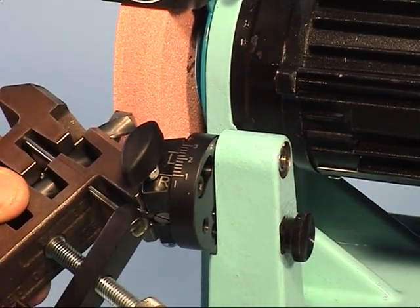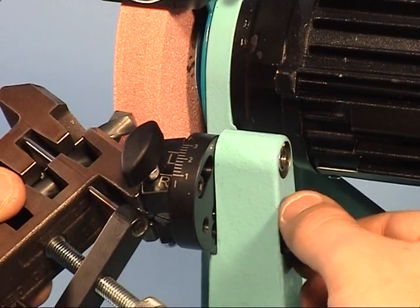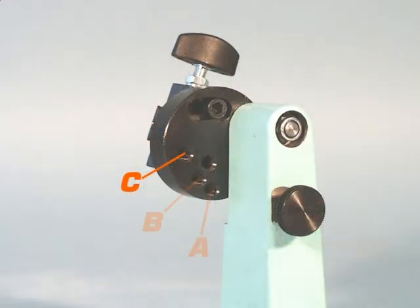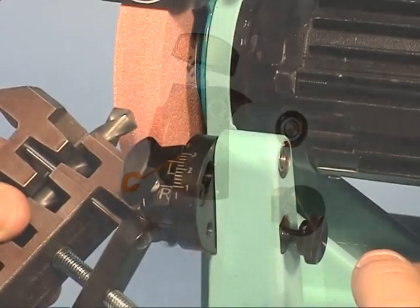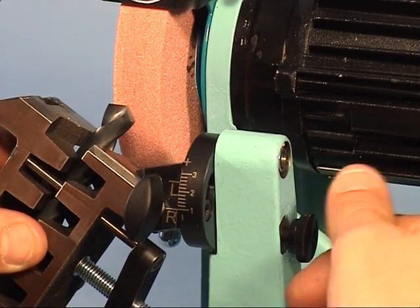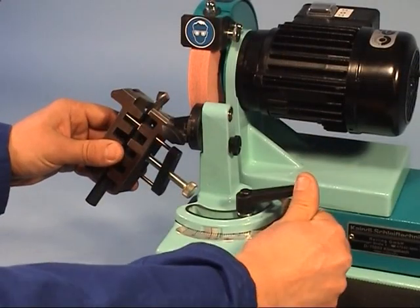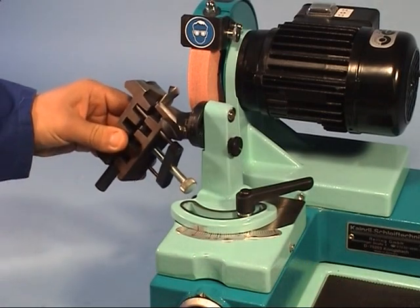Adjust the clearance angle position to 1 and lock the pivoting mechanism in position C. Now move the feed block to the marking A on the left.